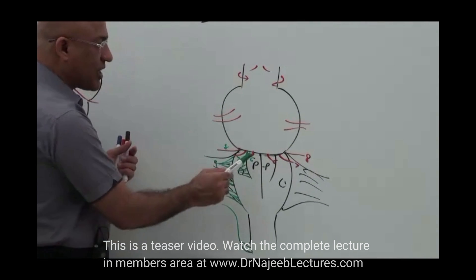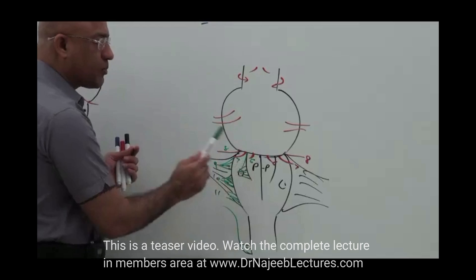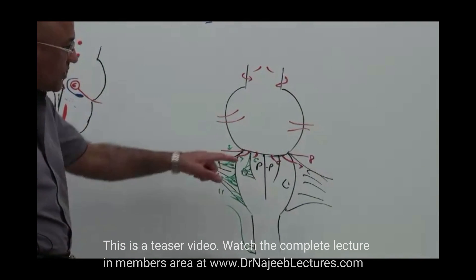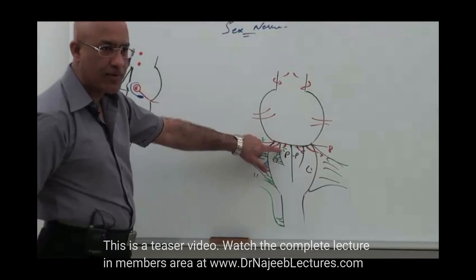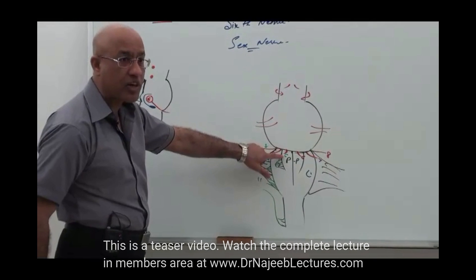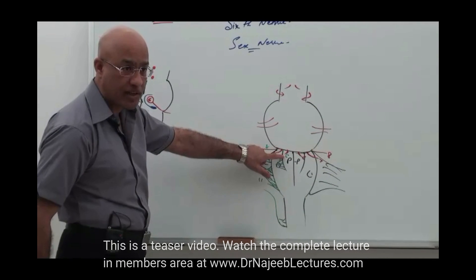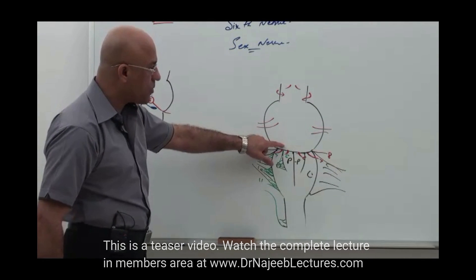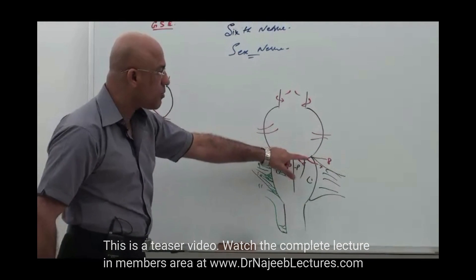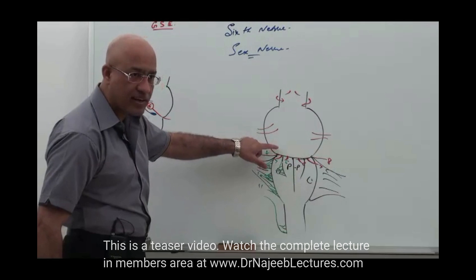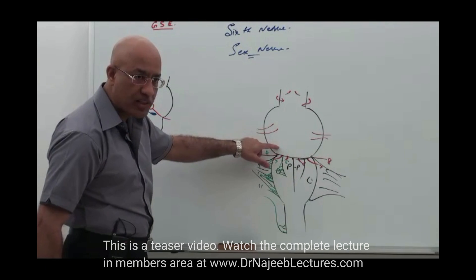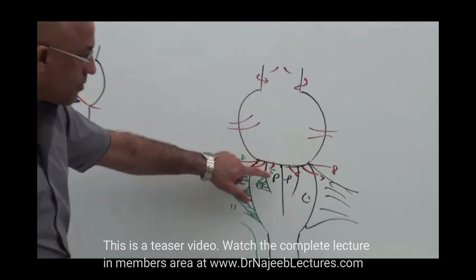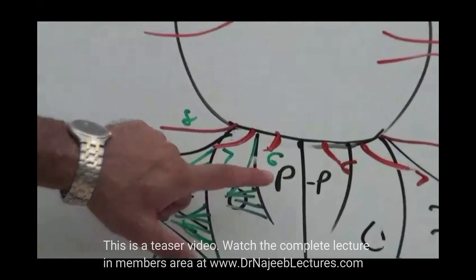So you know the exact position from where the sixth nerve is exiting from or attached to the brainstem — that is at the inferior pontine sulcus, with the pons above and the pyramid below.